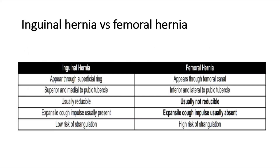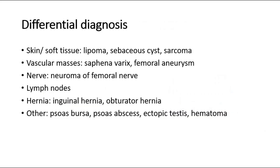This table shows inguinal versus femoral hernia. Inguinal hernia is superior and medial to the pubic tubercle, whereas femoral hernia is inferior and lateral to it. Usually no cough impulse is present in femoral hernia, and there is a higher risk of strangulation in femoral hernia.